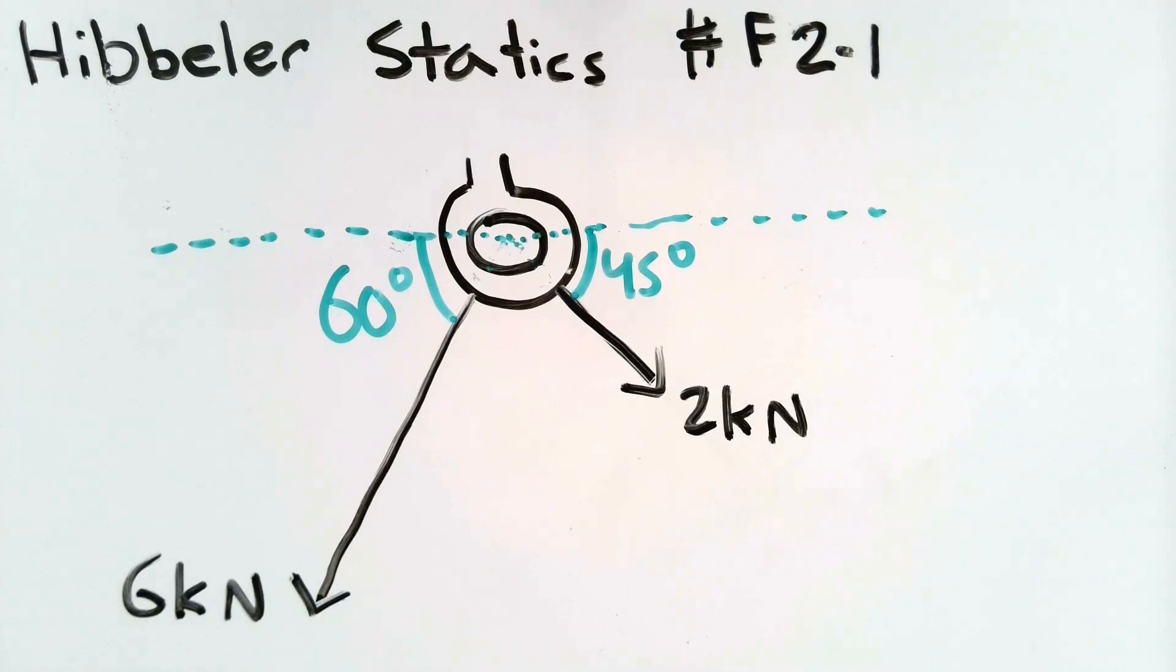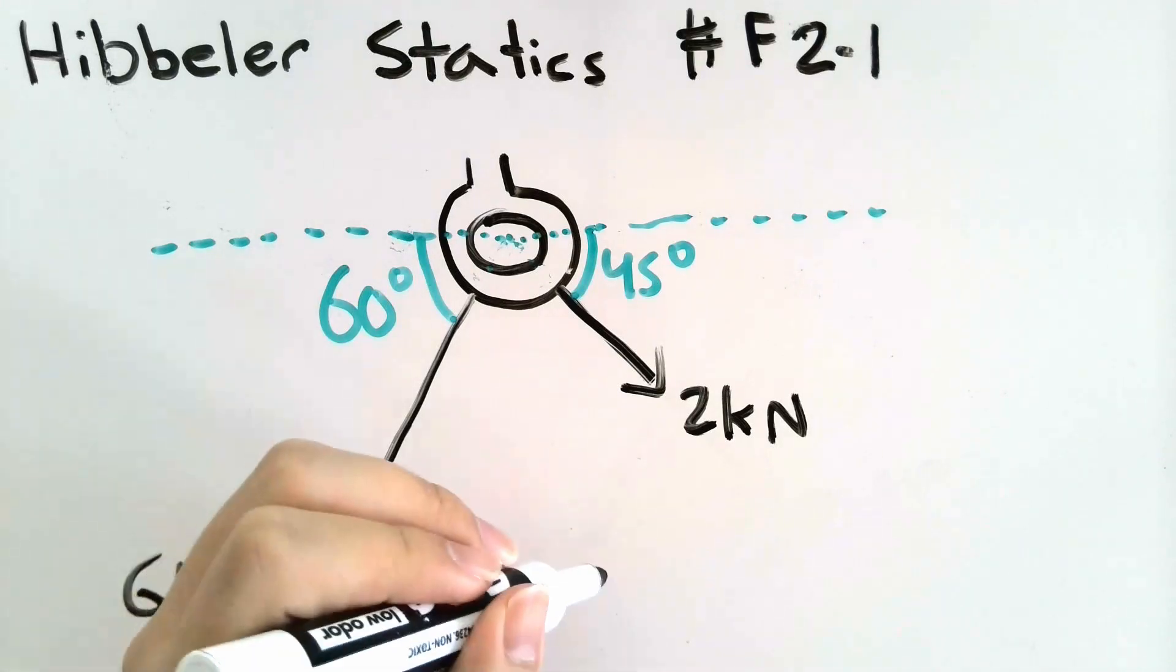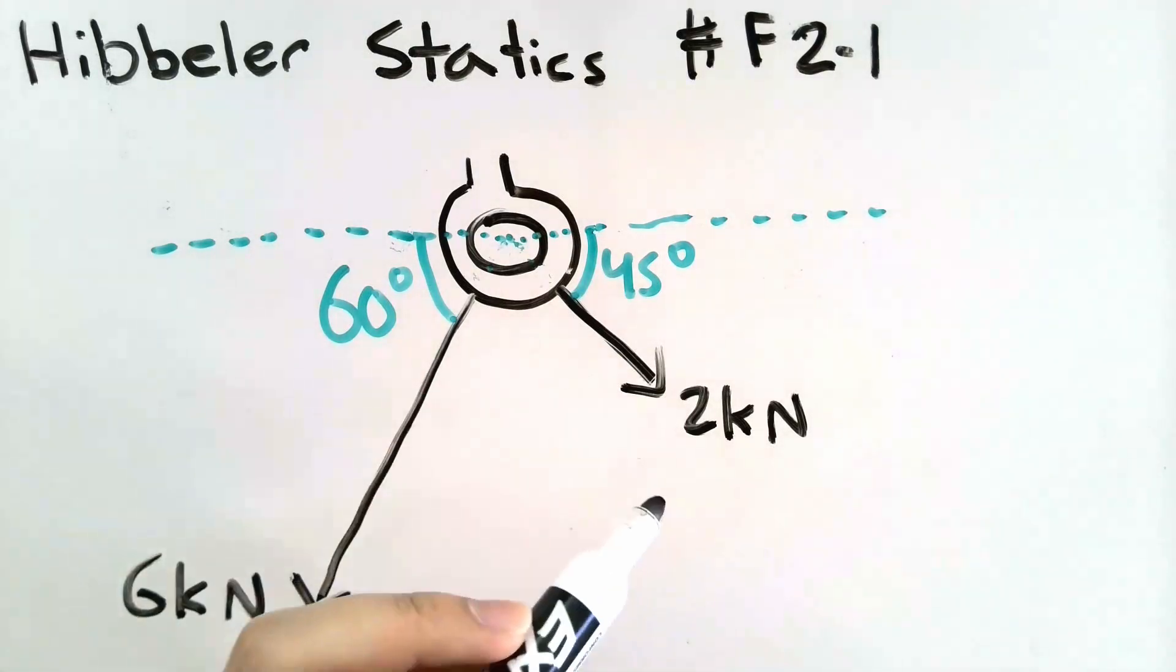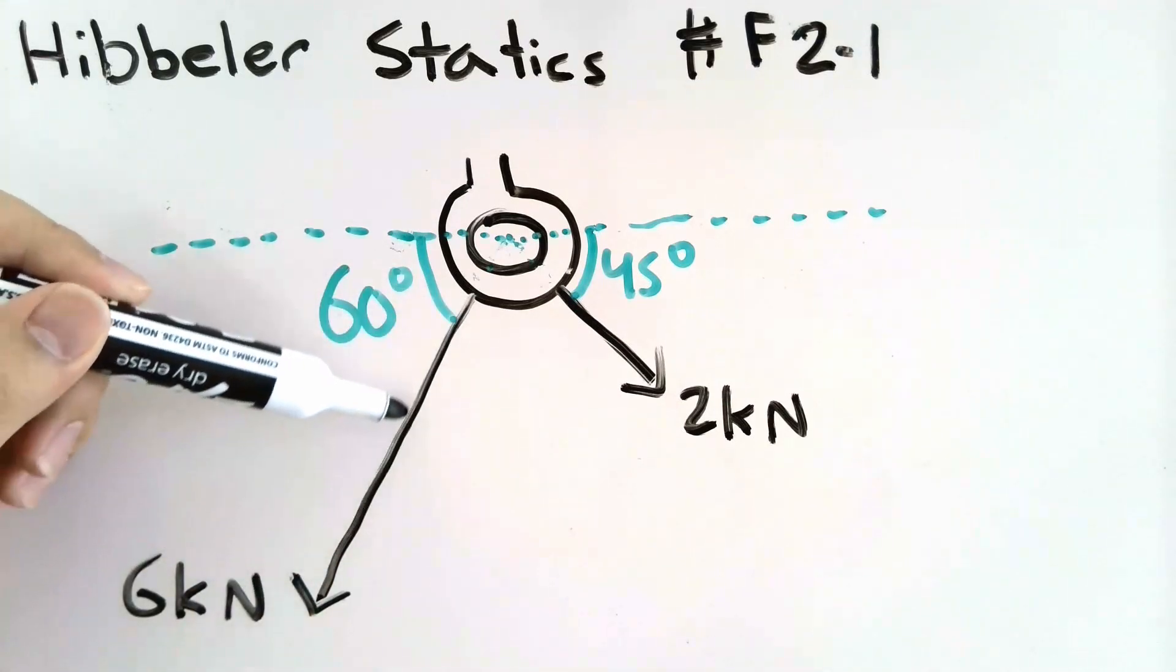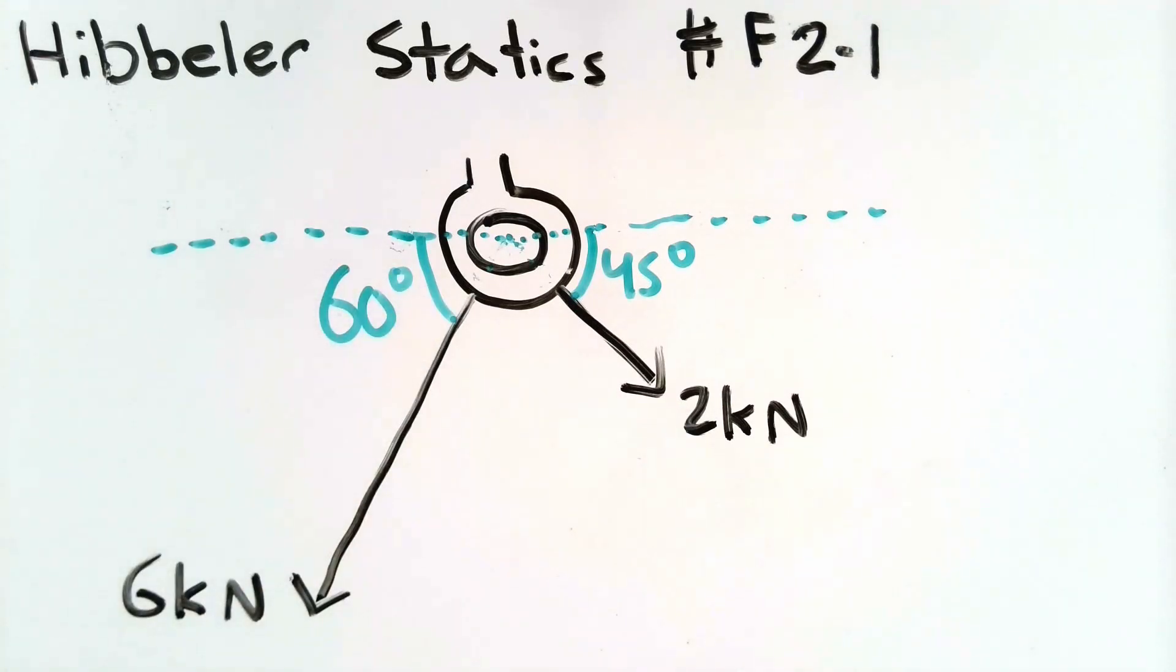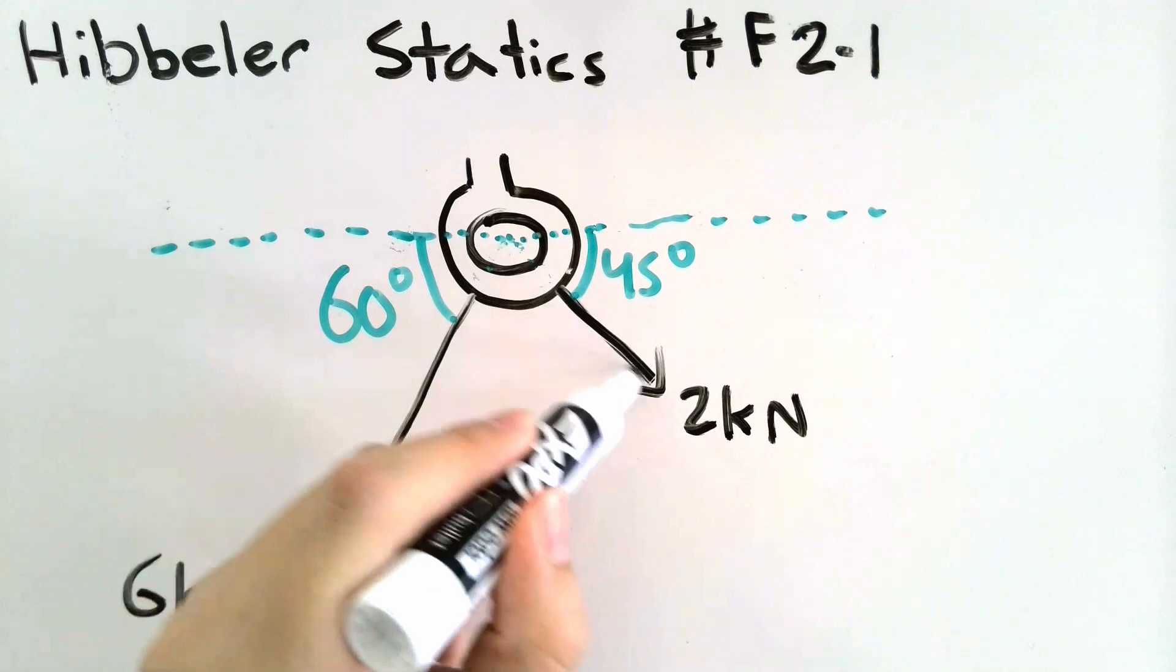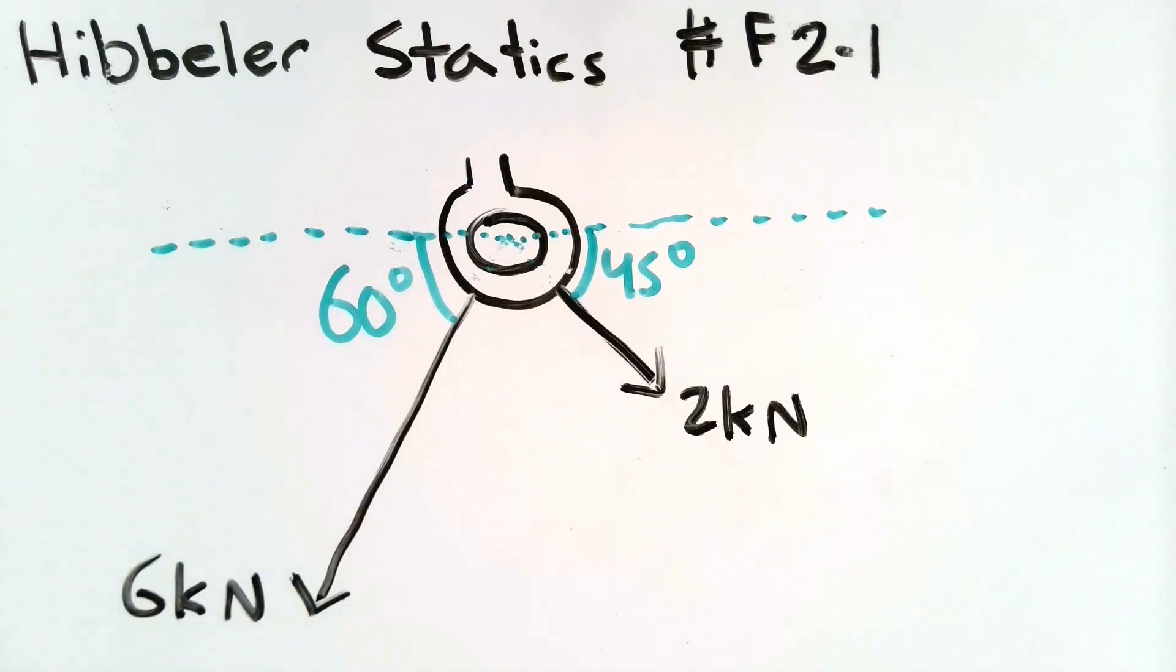Now let's review a little bit about adding vectors. We know that if we were to add two vectors that are acting in two different directions we can do so by adding one vector to the tip of the other vector. In other words if we choose this 2 kilonewton vector as our starting vector and I want to say this vector plus this vector.